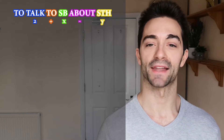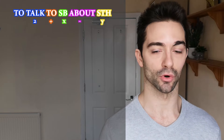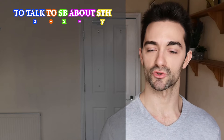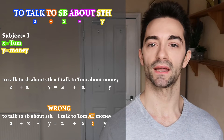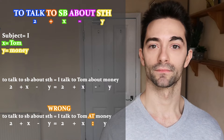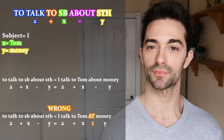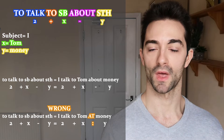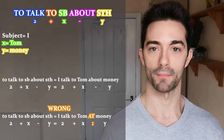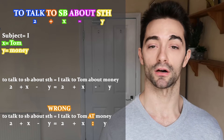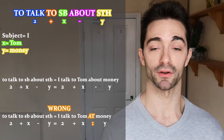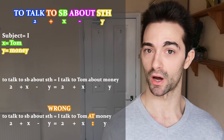So this is our formula: 2 plus x minus y. When we speak, we need to make sure that whatever we say is always equal to this starting formula. So if the subject is I, somebody (x) is Tom, and something (y) is money, let's substitute it into the formula: I talk to Tom about money. Because we are saying that 2 plus x minus y equals exactly 2 plus x minus y.